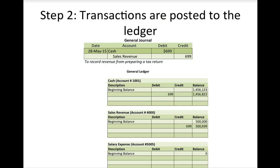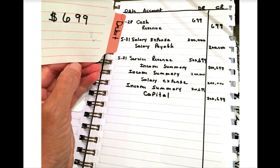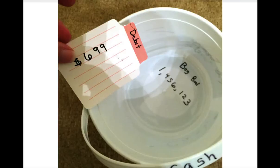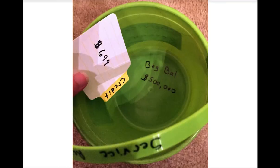Step two: transactions are then posted to the ledger. You have your journal — the listing of transactions — and then you post, which means copy those amounts to the accounts. We do this to find out how much is in each account. I'm going to copy that $6.99 out of the journal and place it into the cash account bucket, so I can see all transactions that affect cash, add and subtract them to know the balance. All these accounts together are called your ledger.